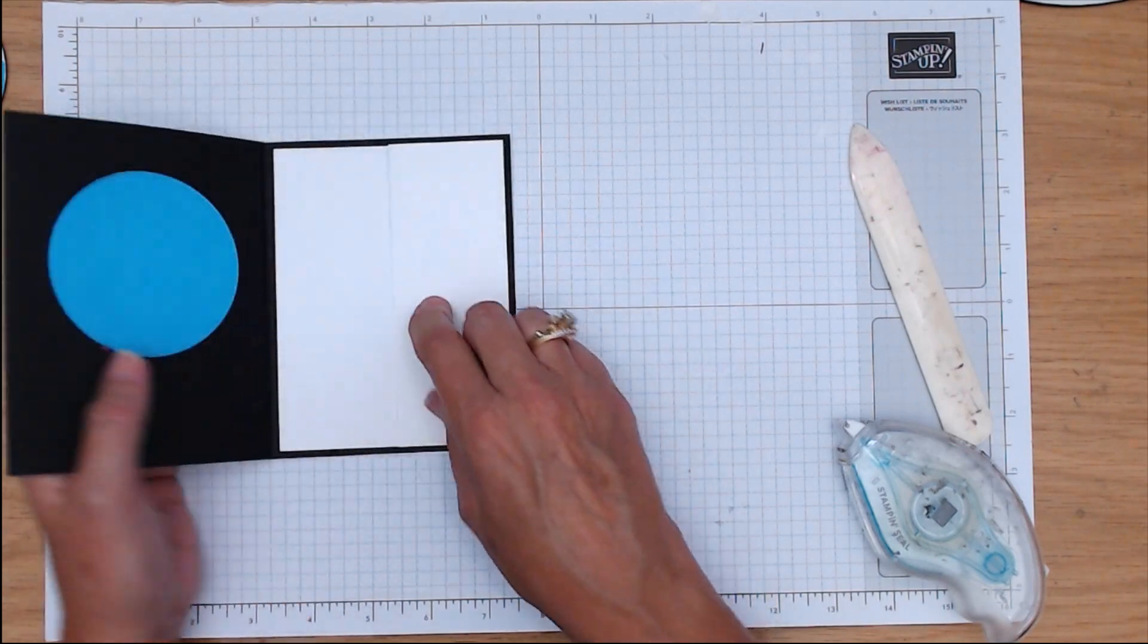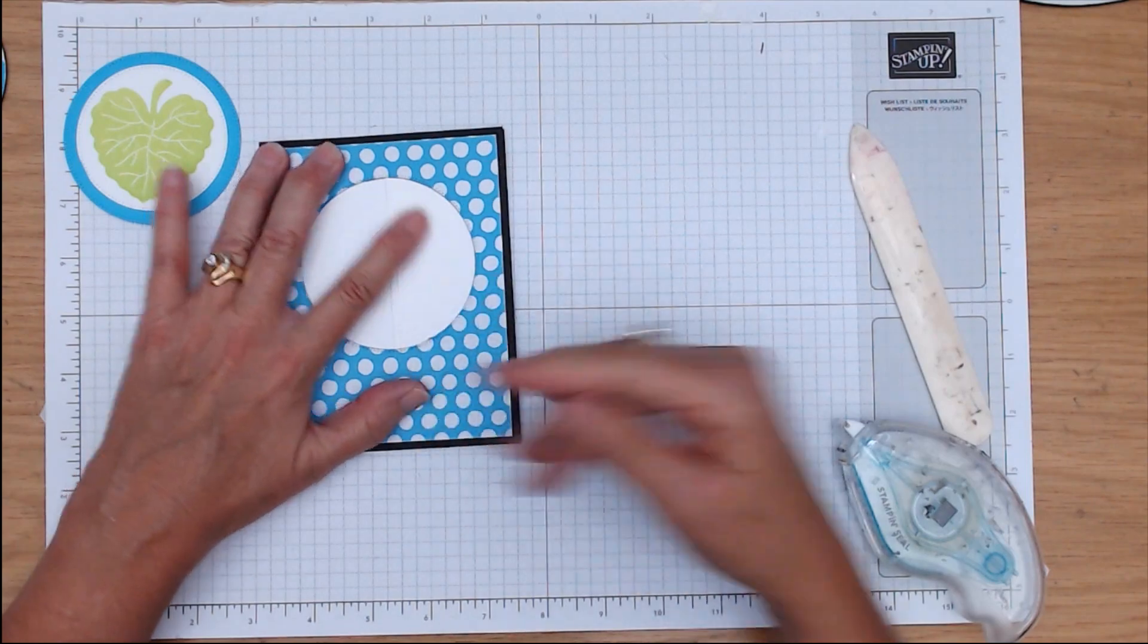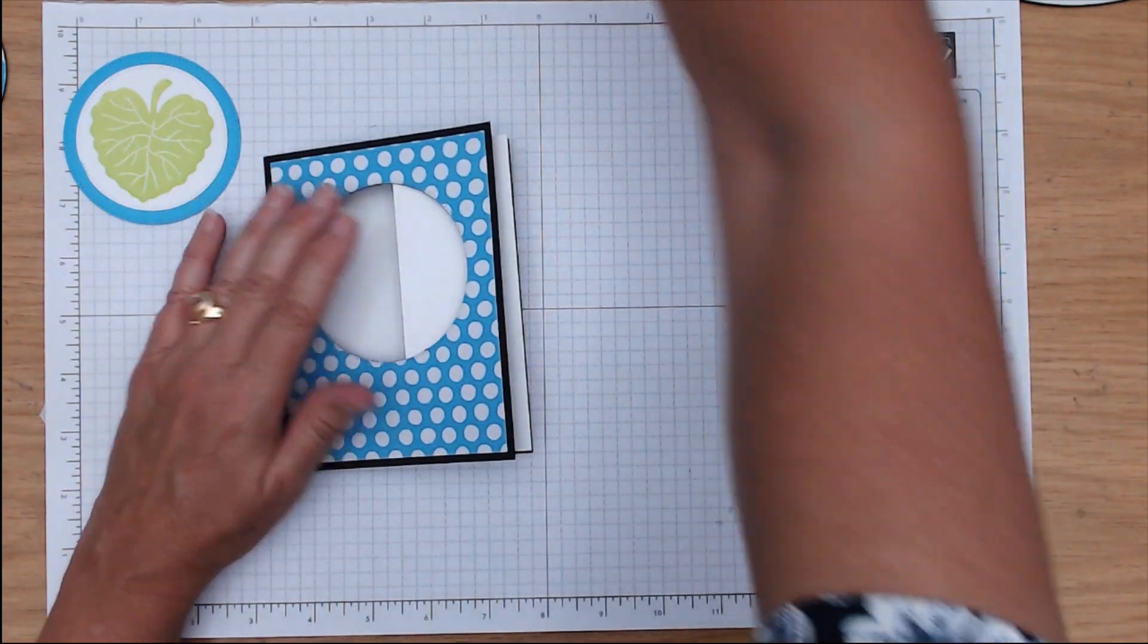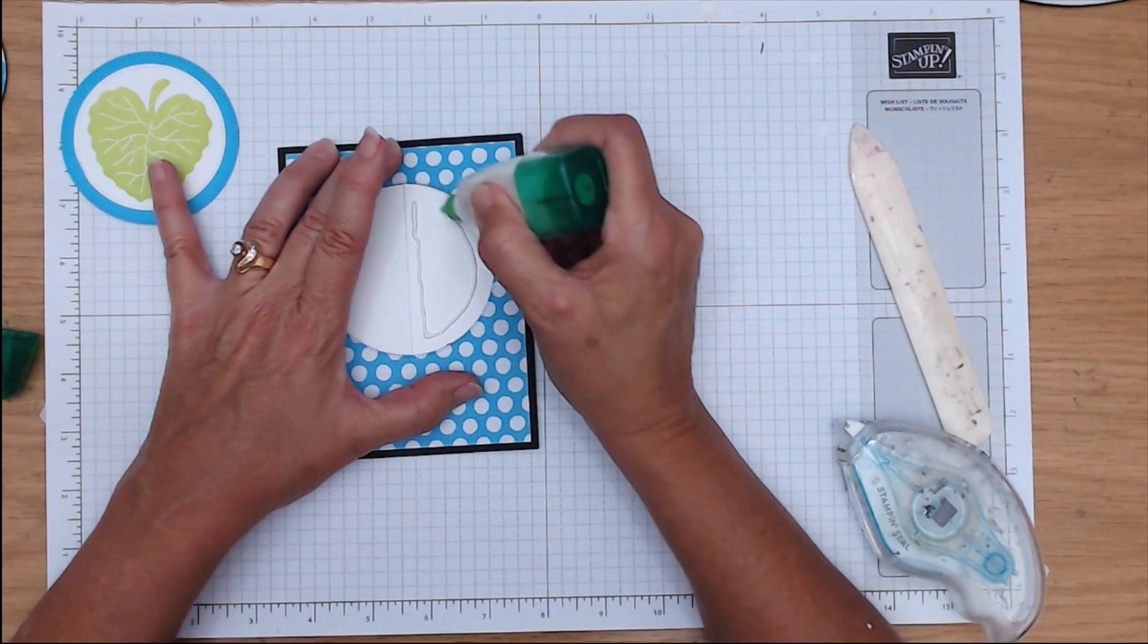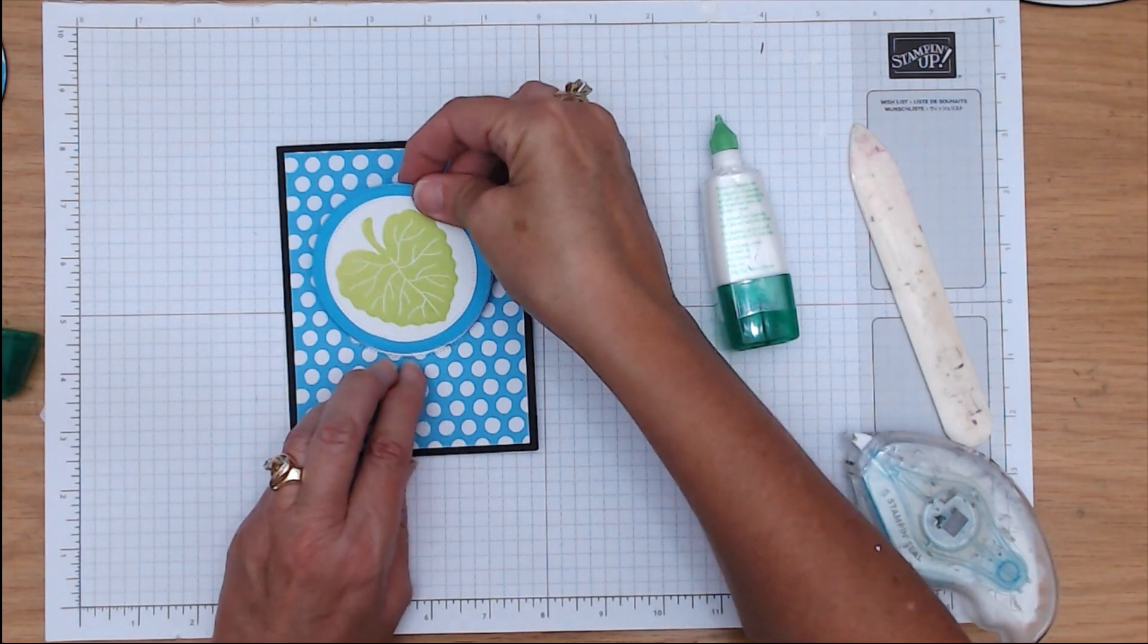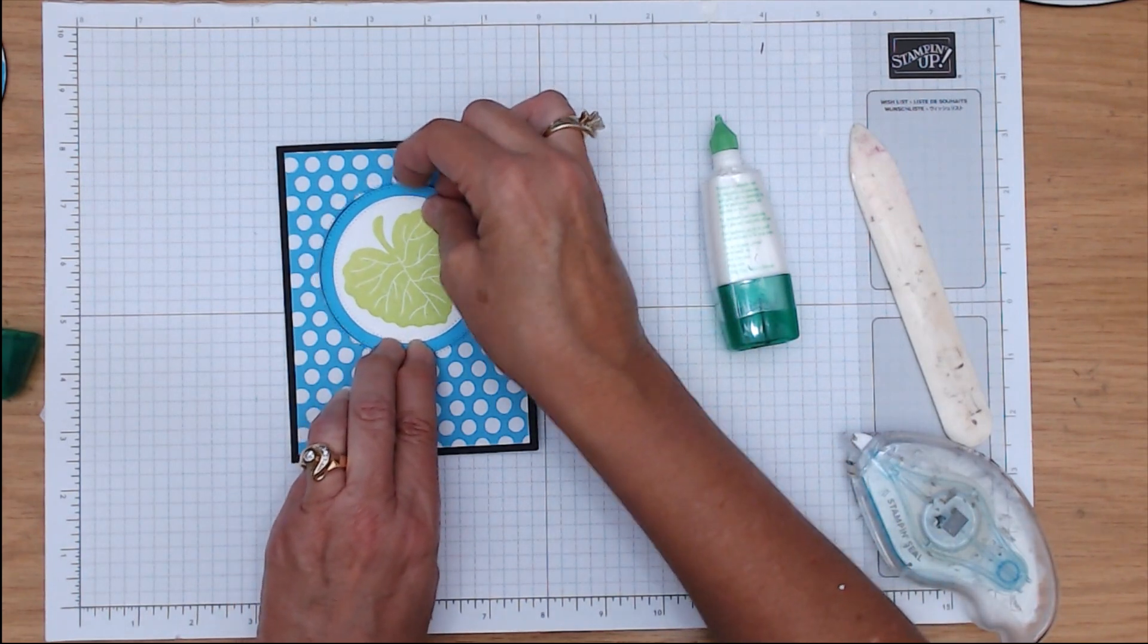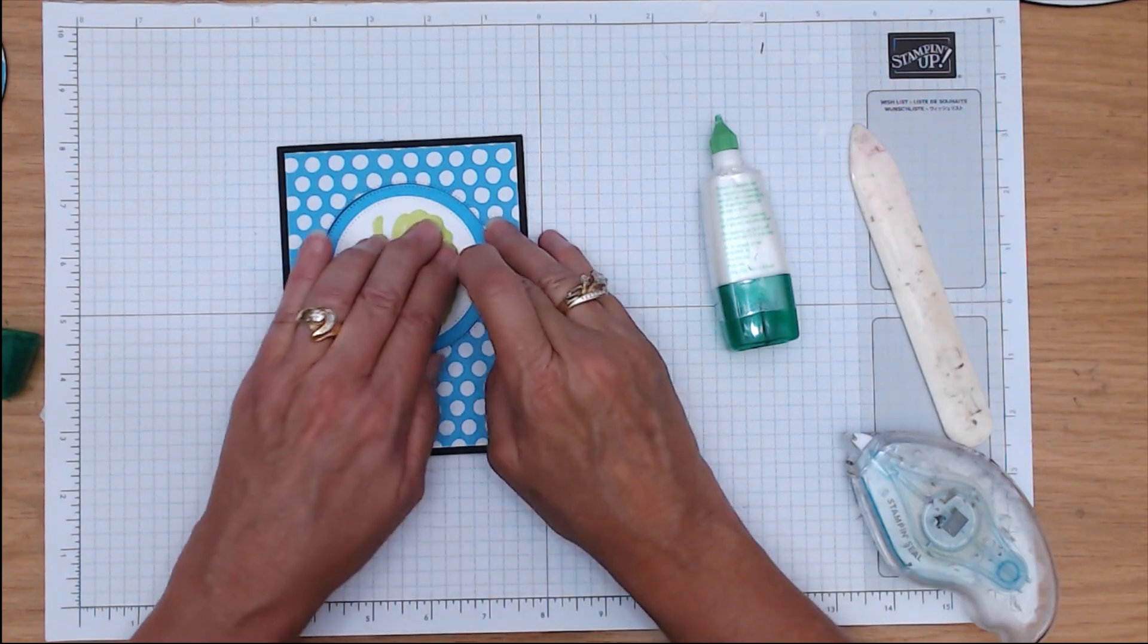But when you adhere it, you only want to have it on this portion right there. Otherwise, you just stuck your card shut. So what I like to do is keep it flat, put my glue here, and that way I know I'm good. I kind of like my leaf on a little bit of an angle. Place that in there, like so.